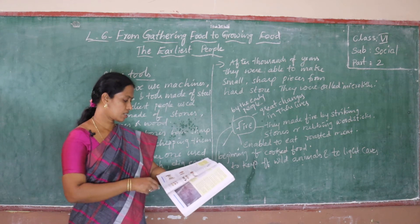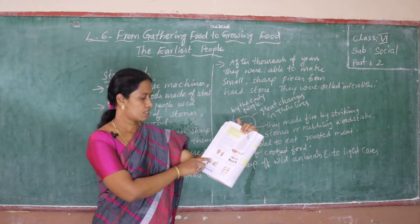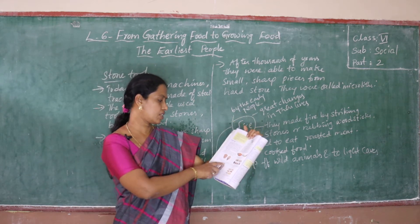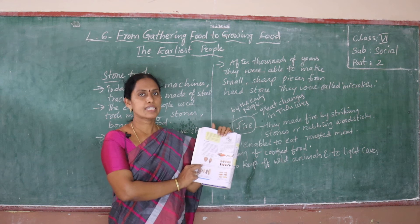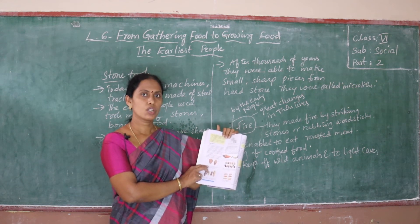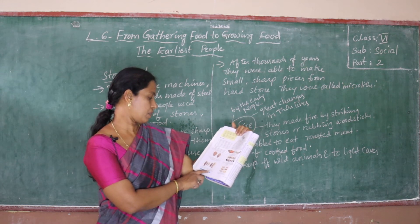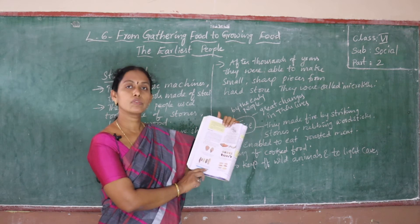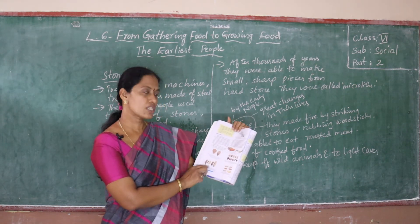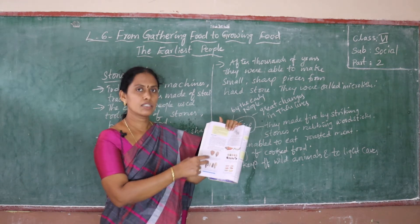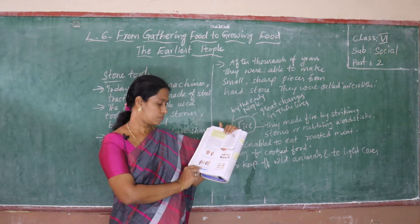I will show you some pictures about those stones. See here on page number 46. Earlier stones were largely excavated in Amarabad, Nagarkarnul district. These stones were found, which were used by the earliest people. Also, blades stripped from stones were excavated in Elishwaram, Nalagonda district. They chipped stones like a blade, and these were found by the excavators.